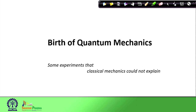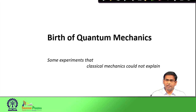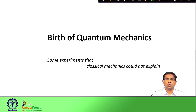Kekulé had his famous dream about the benzene structure, and chemical kinetics had progressed quite a bit. At this juncture, there originated two sub-fields of physics that changed the face of science: the theory of relativity, which deals with bodies that travel at very high speeds approaching the speed of light, and quantum theory, which deals with subatomic particles and the microscopic world.